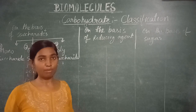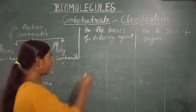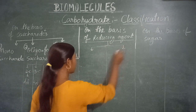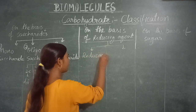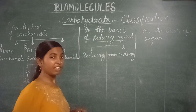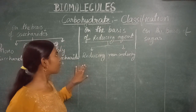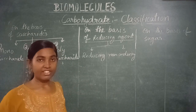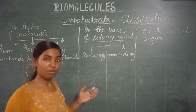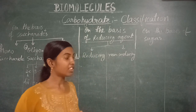On the basis of reducing agent: these carbohydrates have the nature to reduce weak oxidizing agents. They are divided into two parts — reducing and non-reducing. It is important to note that these oxidizing agents which are reduced by carbohydrates are frequently asked in exams. You have to remember which are reducing and which are non-reducing carbohydrates.